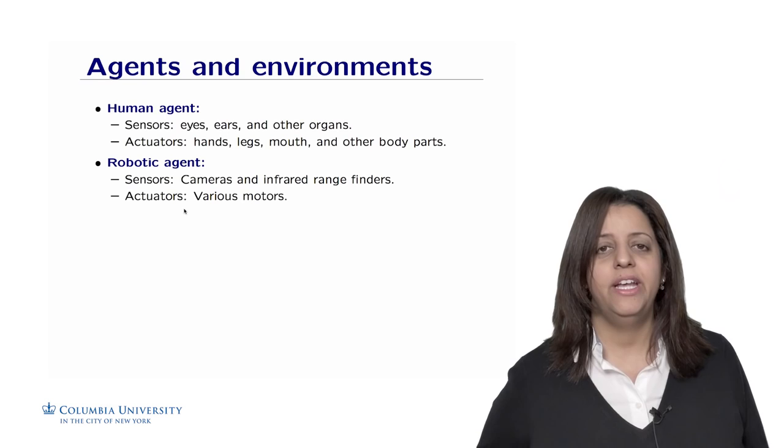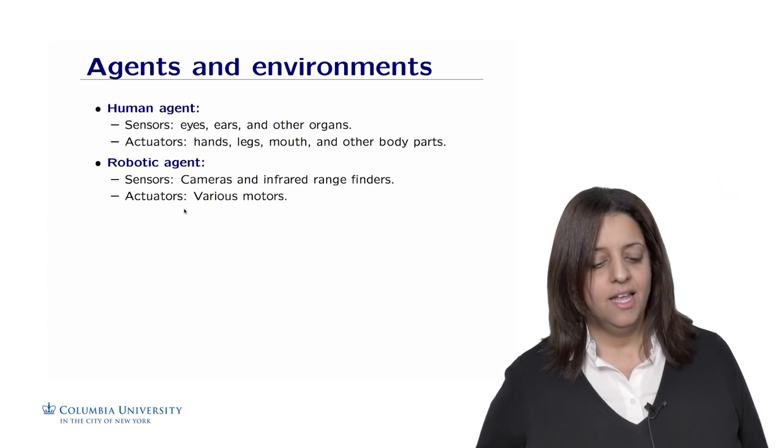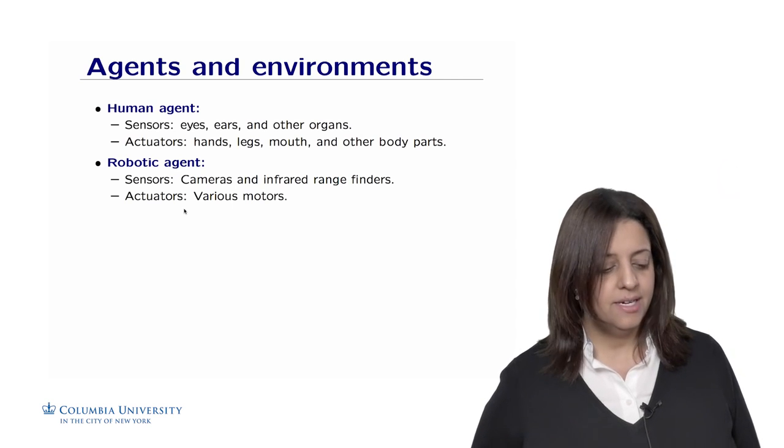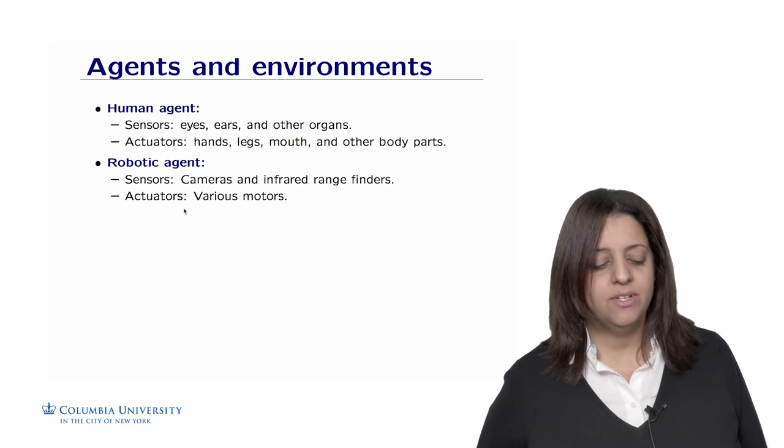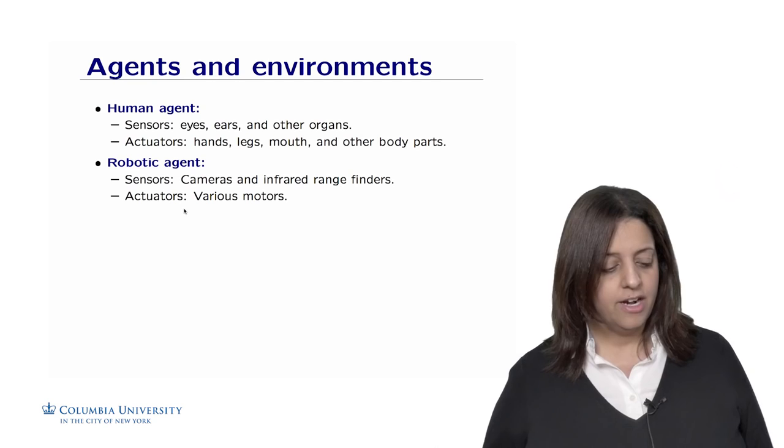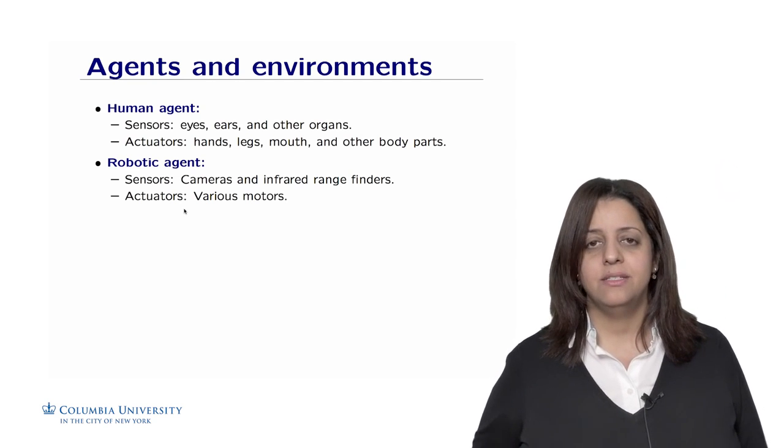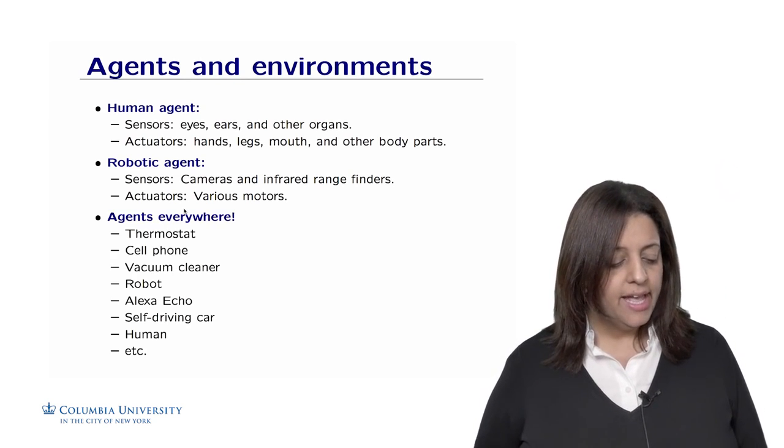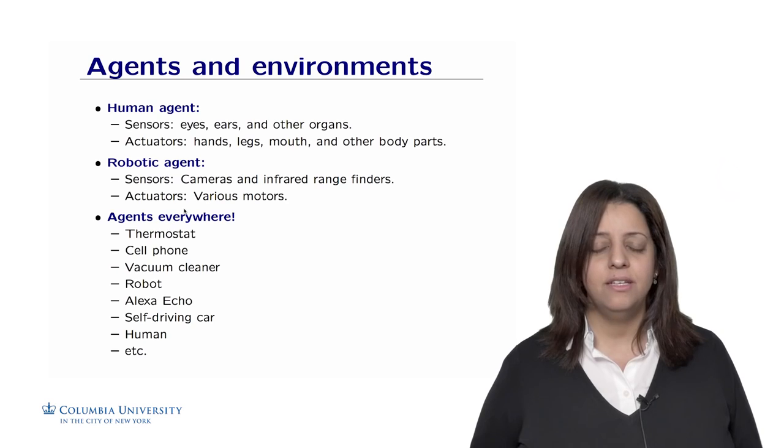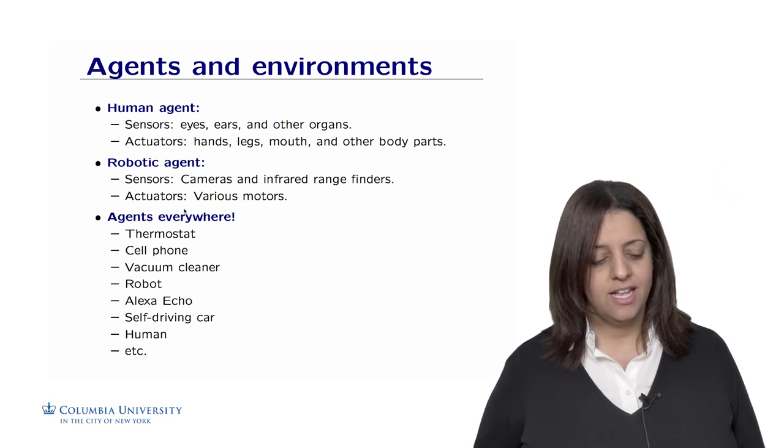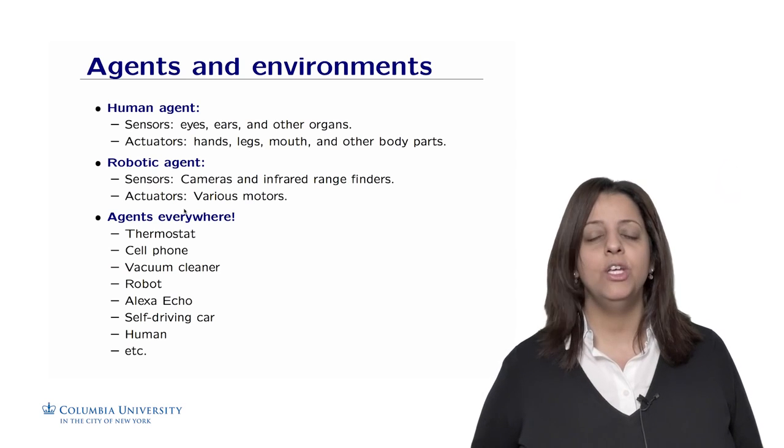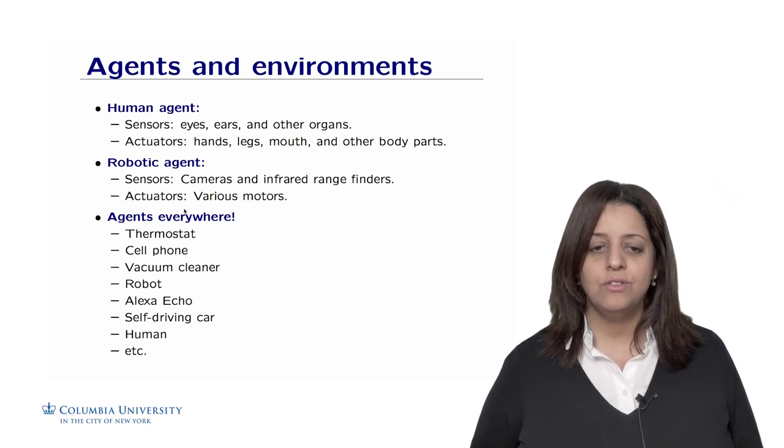Examples of agents include human agents that have as sensors the eyes, the ears, and other organs, and actuators that are the hands, legs, mouth, and other body parts. Robotic agents have as sensors the camera, infrared range finders, and other kinds of sensors that allow them to move safely in the environment. And the actuators are the various motors that make the robot move. Agents are everywhere. This includes a simple thermostat that maintains the room temperature, to your cell phone that includes a lot of functionality such as emails, web pages, and weather.